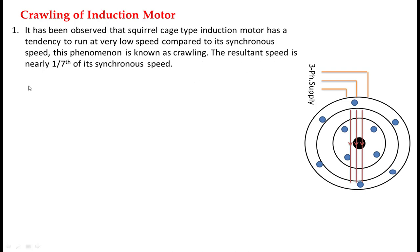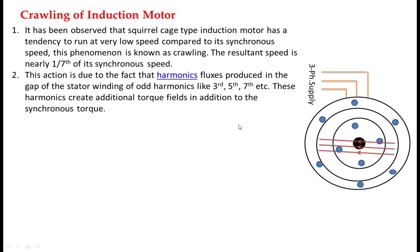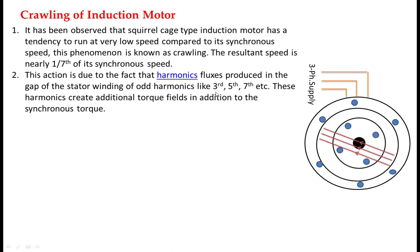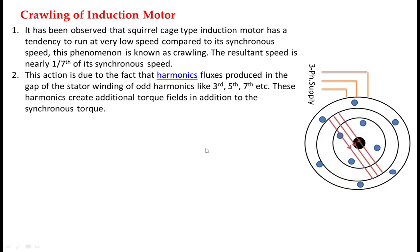The resultant speed is nearly 1/7th of the synchronous speed. This phenomenon of rotating the rotor of a three-phase induction motor at nearly 1/7th of the synchronous speed is called crawling. Why does this happen? The air gap flux is not a pure sinusoidal. So, according to Fourier series, it consists of only the odd harmonics — that is the 3rd, 5th, 7th, 9th, 11th, and so on — along with the fundamental.